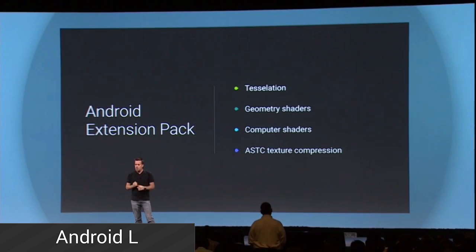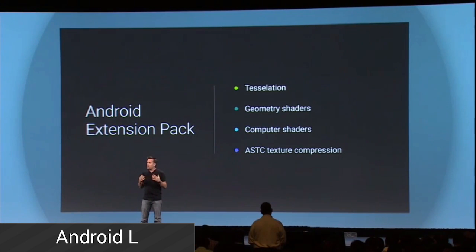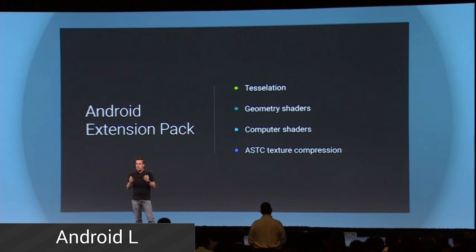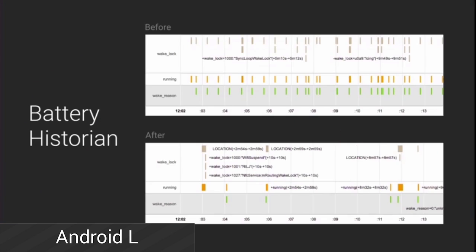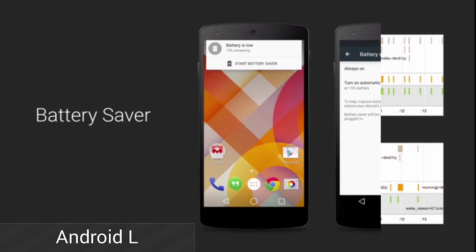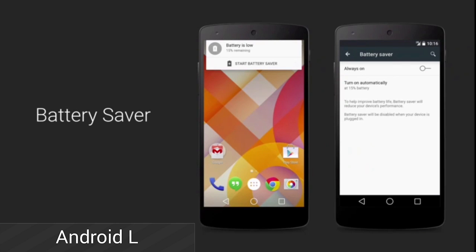They also worked with ARM, Qualcomm, and Nvidia to create better handling of graphics, which includes tessellation, various shaders, and a whole lot more. The last thing they talked about is battery life. There will now be a new way to monitor battery stats that shows things like wake locks and rogue apps, allowing you to more easily identify and fix them. They've also redone how apps handle network connections, GPS, Bluetooth, and more to help squeeze every last second of battery life. There is also a new built-in battery saver mode should you need that.